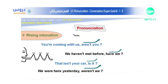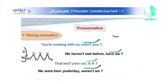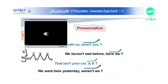Now we have pronunciation — it's about rising intonation. For example: 'You are coming with us, aren't you?' I want you to listen to the voice at the end. The voice is going up: 'aren't you?' The voice is going high, not low. This is the rising intonation. We have four examples on page six — questions to confirm — let's listen.